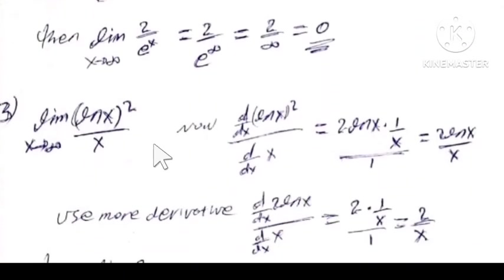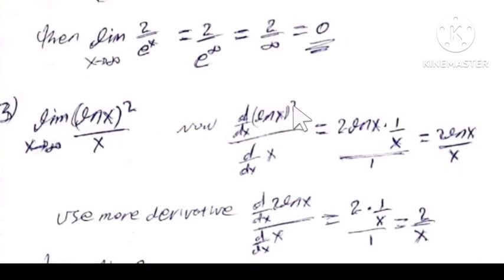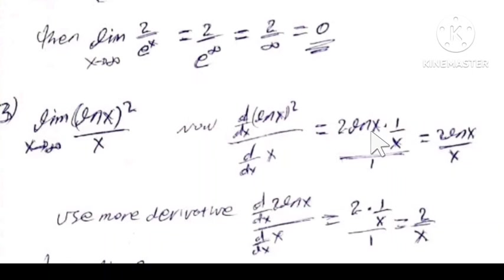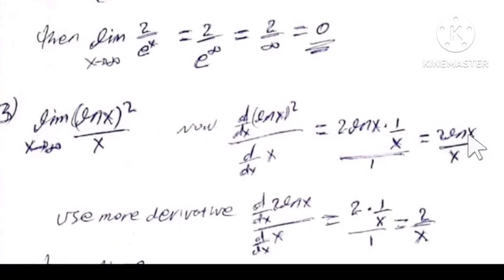The last example: the limit of ln(x²) over x. The derivative of the numerator ln(x²): by the chain rule, the outer part derivative gives 2·ln(x), times the inner part derivative of ln(x) which is 1 over x, giving 2·ln(x) over x. The derivative of the denominator x is 1. Therefore we have 2·ln(x) over x.